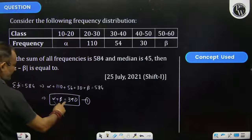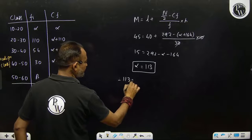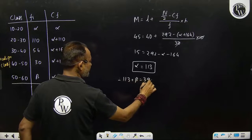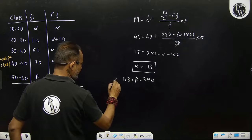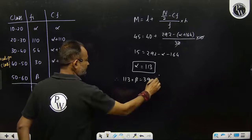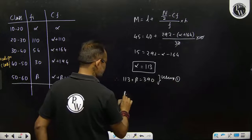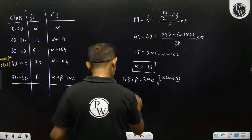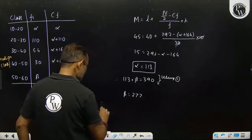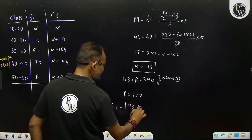Use equation 1, alpha plus beta equal to 390. Then beta is 277. Then we want mod alpha minus beta, 113 minus 277.